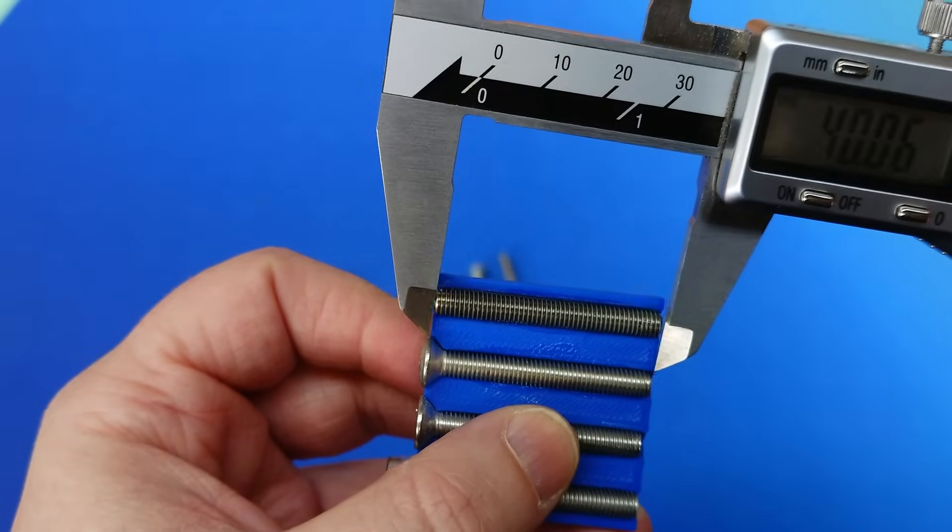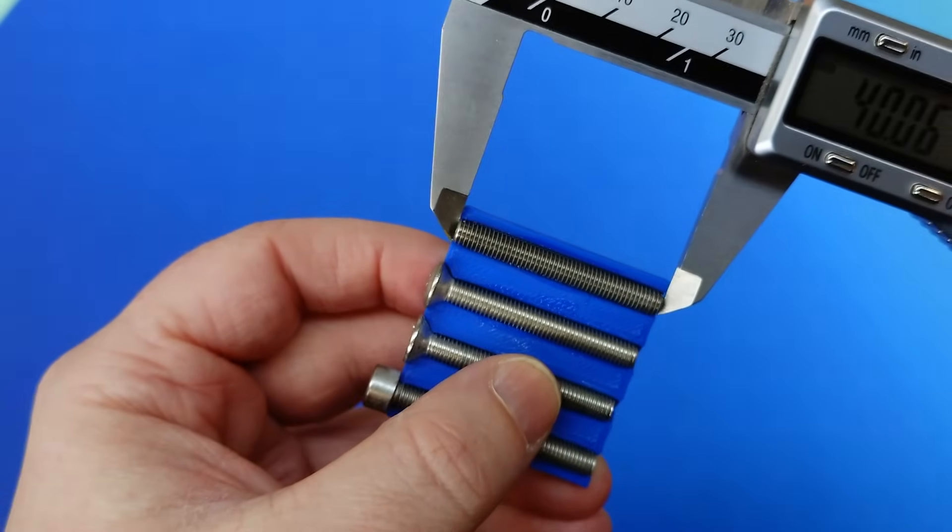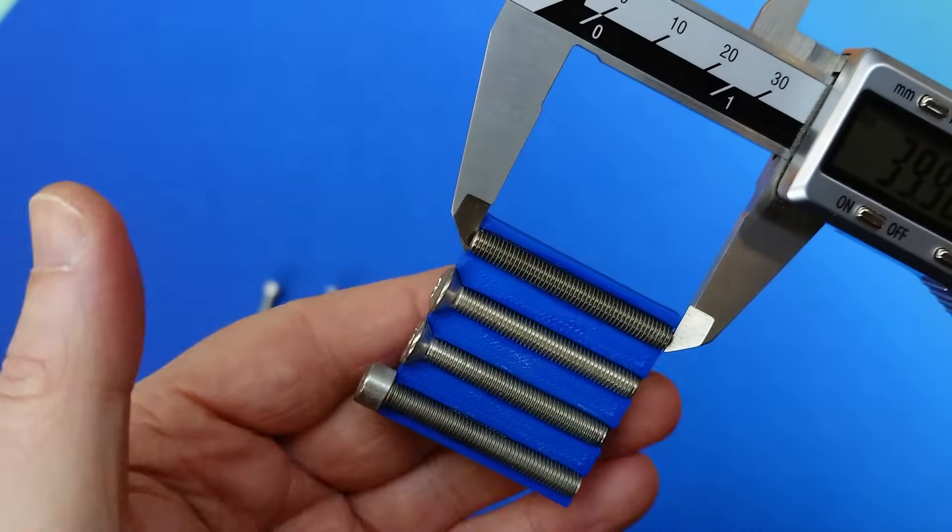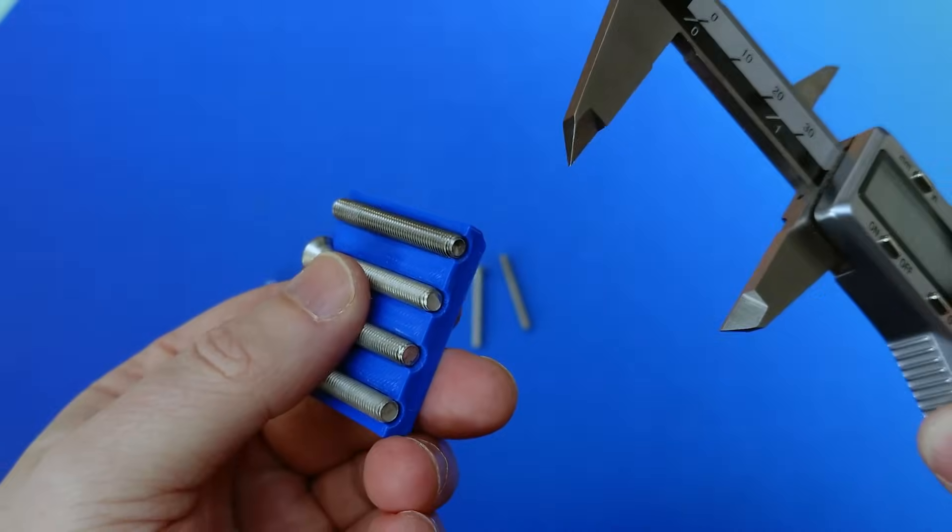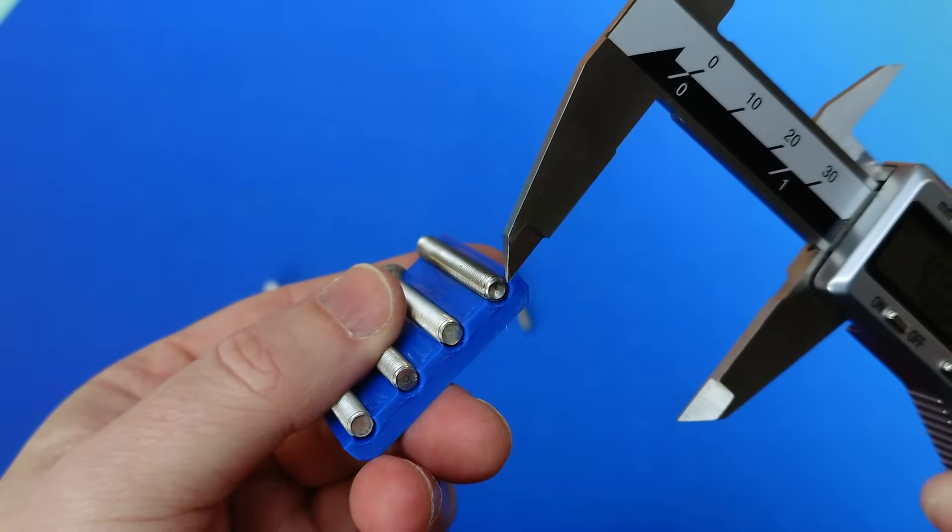Lastly, grub screws, or set screws, whichever you want to call them. Since these are headless fasteners, the only way to really measure the length of them is to measure the entire thing, so the overall length, tip to tip, including any tips on the end, like a nylon point or ball spring.